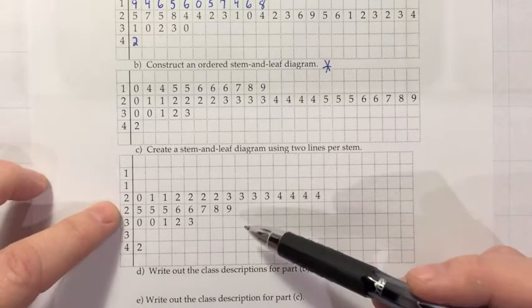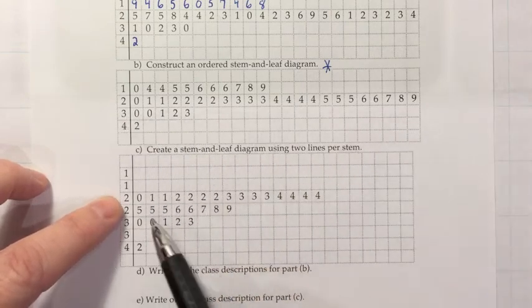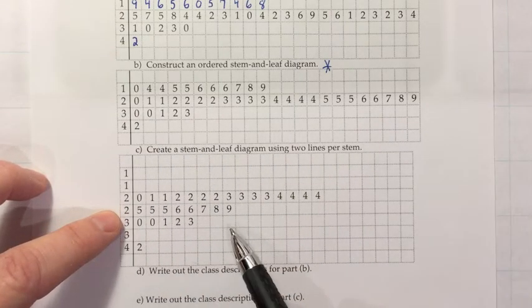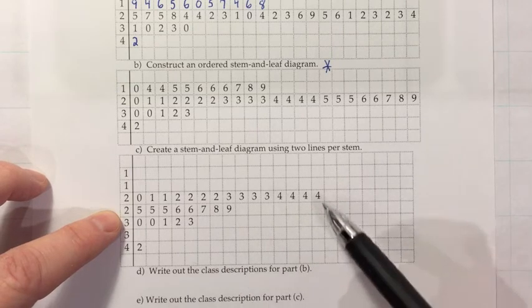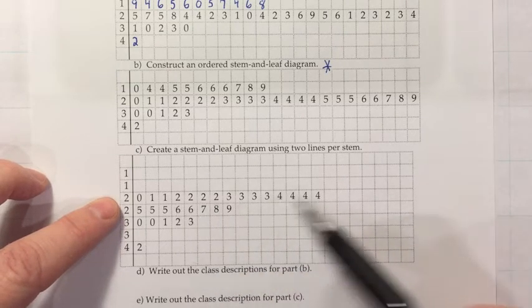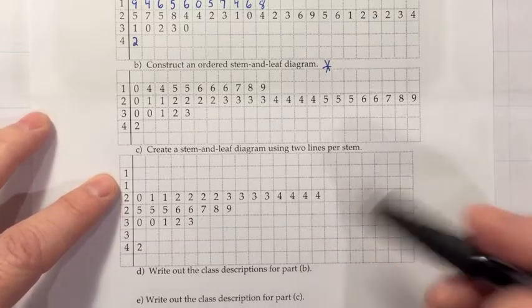When you do that, you're taking each one and breaking it into kind of a lower and upper. So the class for the twenties becomes lower twenties and upper twenties. And we make the split there in the same way that we would if we were doing rounding. So four and down goes in the lower twenties and five and up go in the upper twenties.